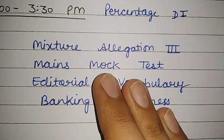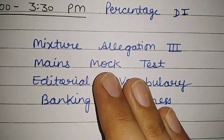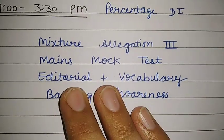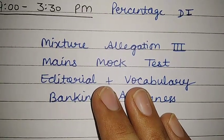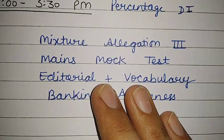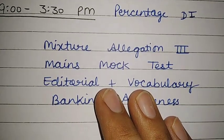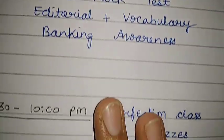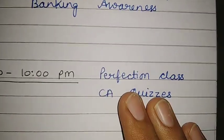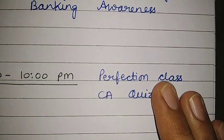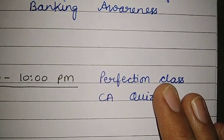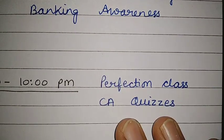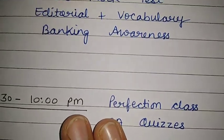Then there is editorial and vocabulary, because that is also important. Then there is banking awareness, and at the last there is perfection class for English and current affairs quizzes.